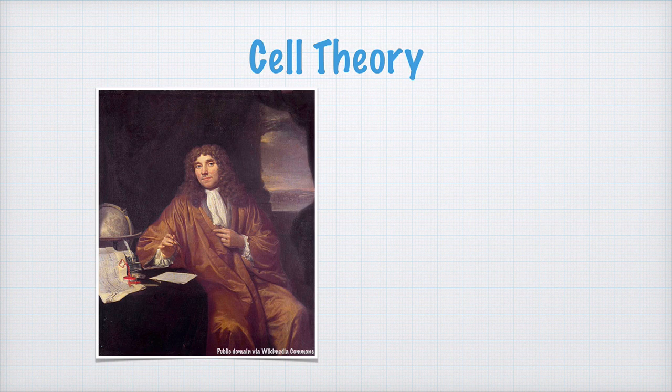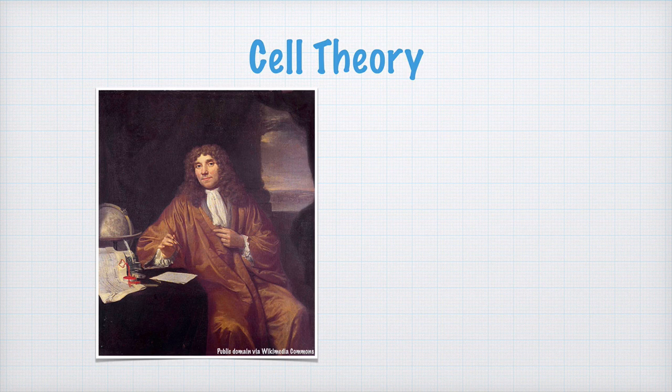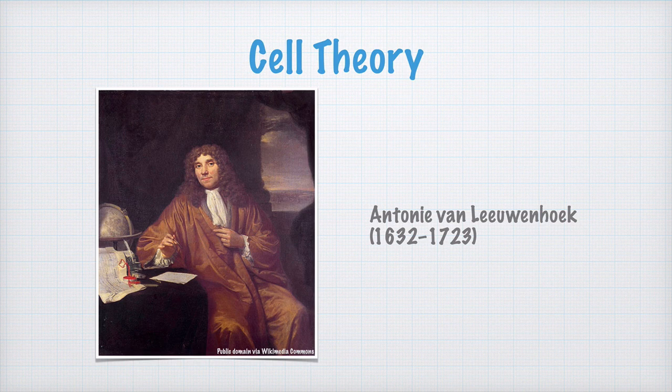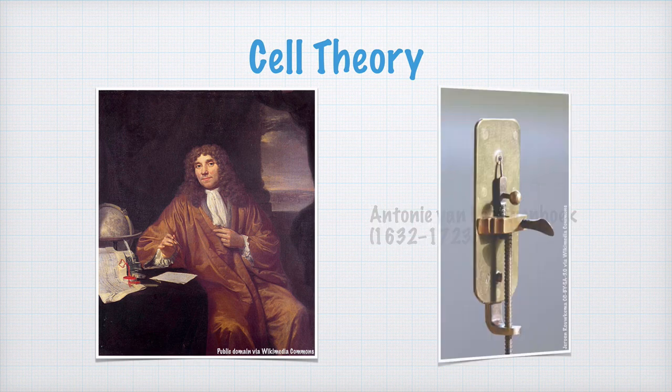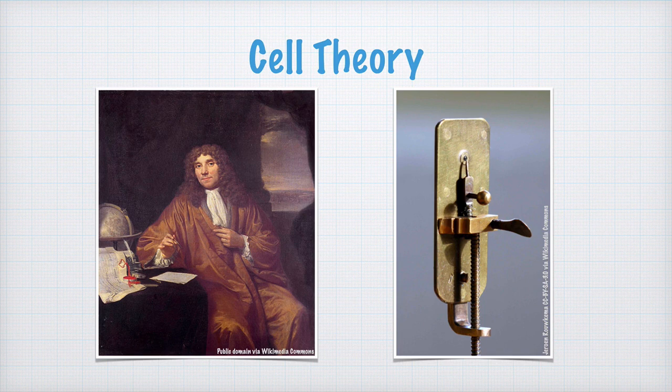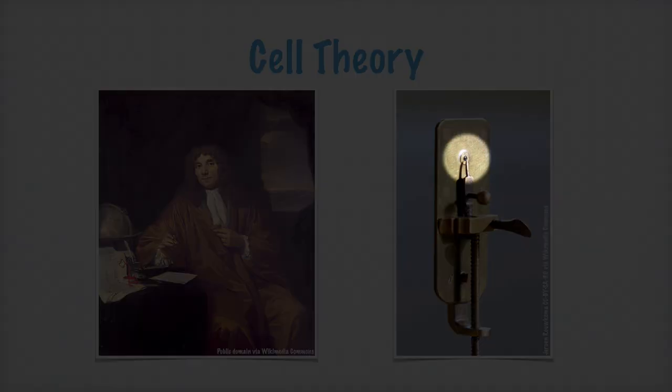The first microscope is sometimes said to have been invented by Anthony van Leeuwenhoek in the 1600s. He discovered a way to make almost perfectly round small glass pearls, which he mounted inside a metal plate. The specimen was placed on this tip, and the whole apparatus, about the size of a matchbox, was held in front of the eye.